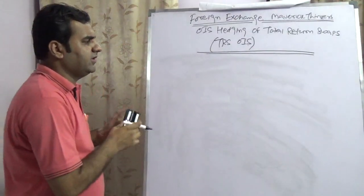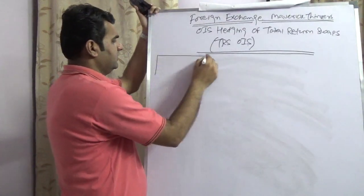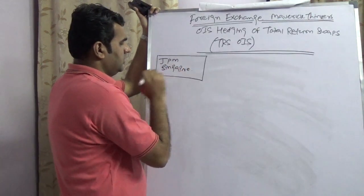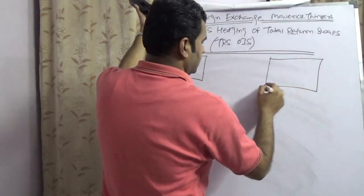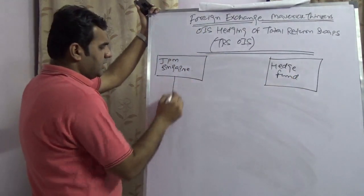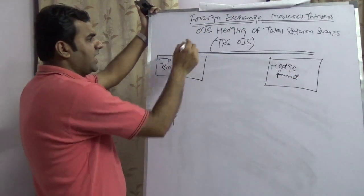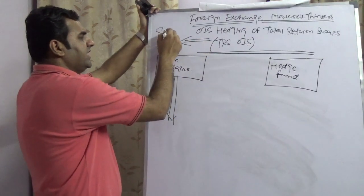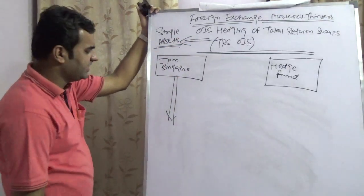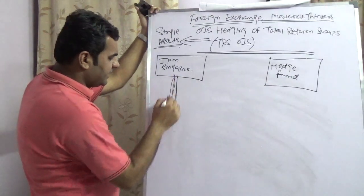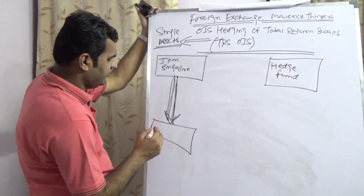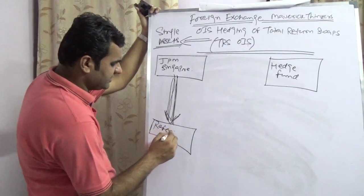This is how it is going to get worked. You would have a bank, which is JP Morgan Singapore, and you would have a hedge fund. Since we are assuming single asset, not multi-asset TRS, in single asset TRS we are assuming the asset is in the hands of the bank, which I would reference as the reference asset.